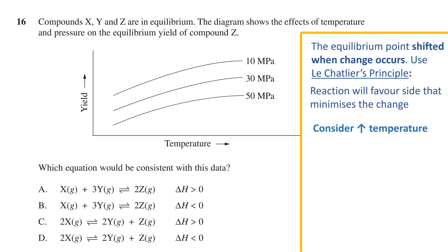Let's start by considering an increase in temperature, leaving all else constant. On this plot, that would be represented by moving from left to right along one of the constant pressure curves. On each of the curves provided, that would be a movement upward, meaning an increase in temperature leads to an increase in yield. Since yield here refers to compound Z, the production of Z is favored when temperature goes up.